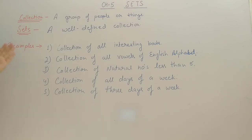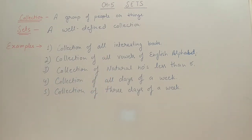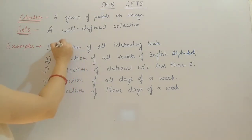I have taken a few examples to explain the difference between collection and set. The first example is the collection of all interesting books. In this example the word 'interesting' is not well-defined, because a particular book may be interesting for me but boring for you. So this first collection is not a set — we will call it only a collection.